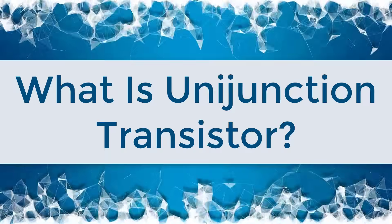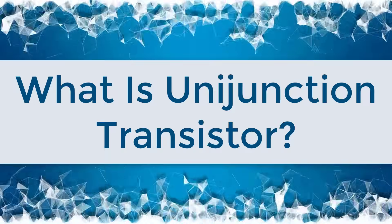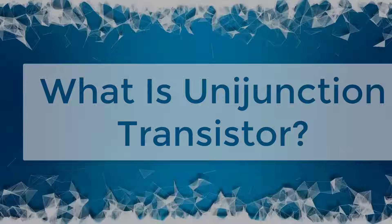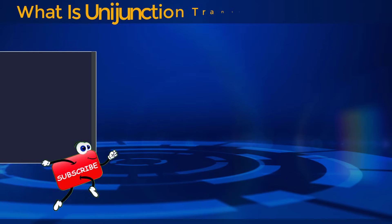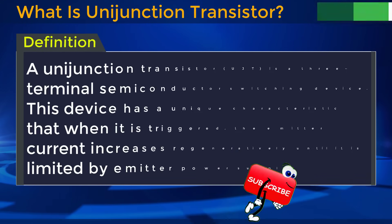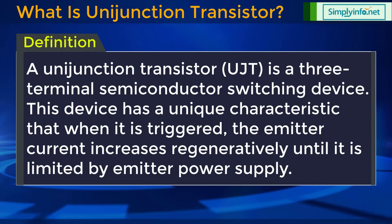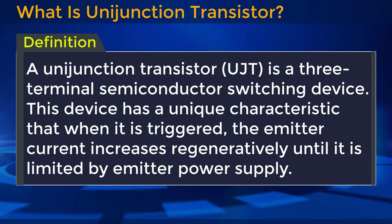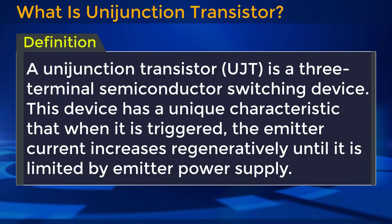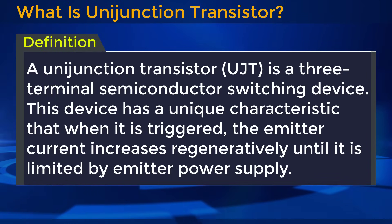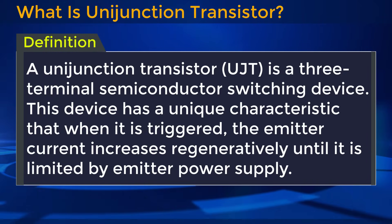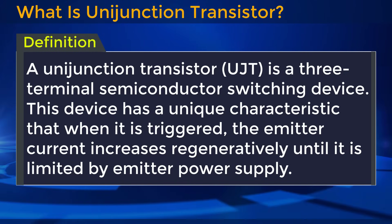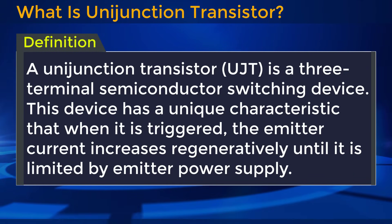What is Unijunction Transistor? Unijunction Transistor is a 3-terminal semiconductor switching device. This device has a unique characteristic that when it is triggered, the emitter current increases regeneratively until it is limited by emitter power supply.